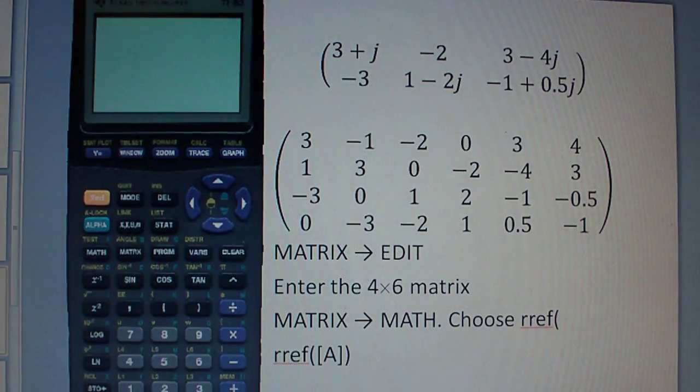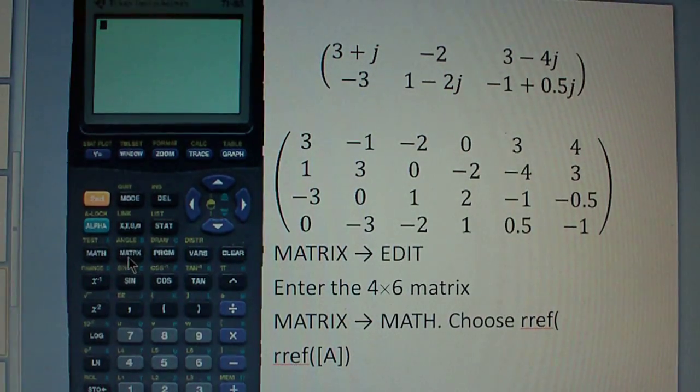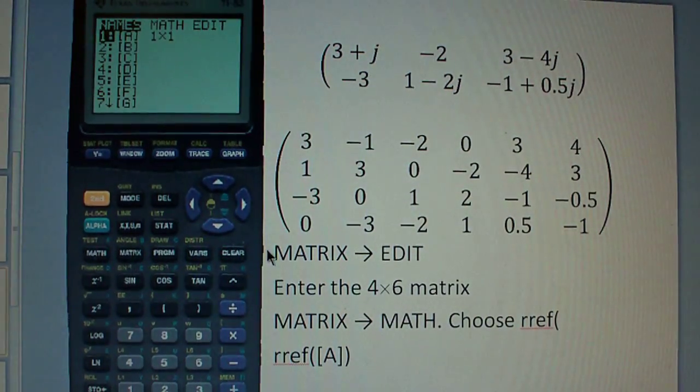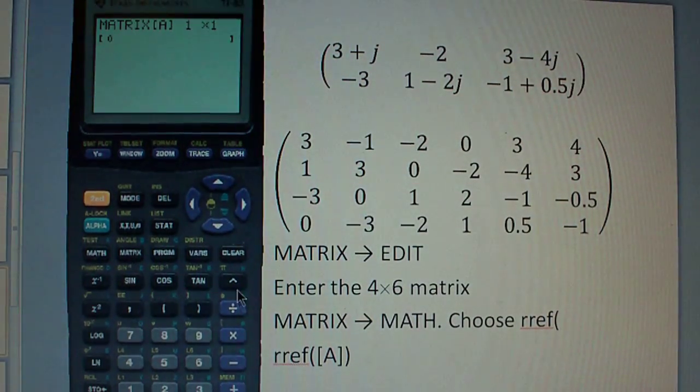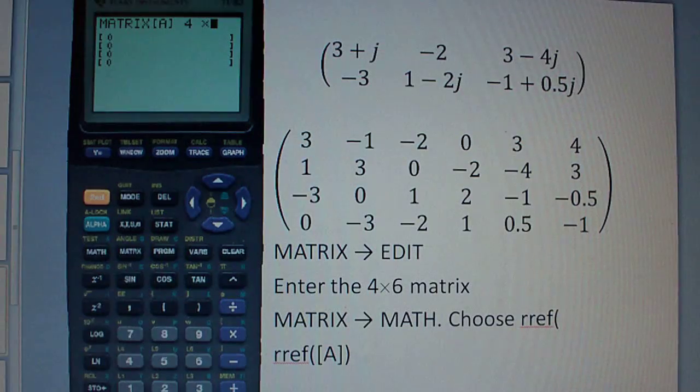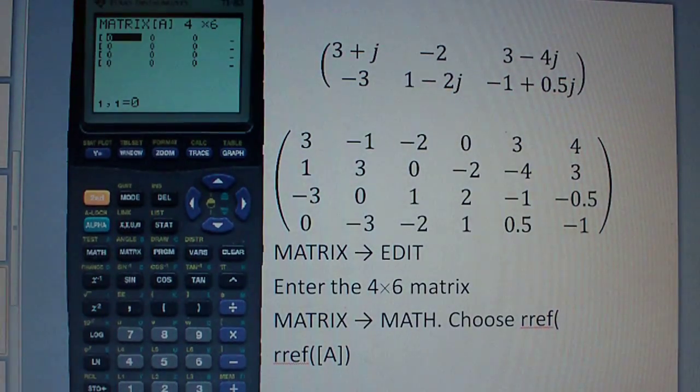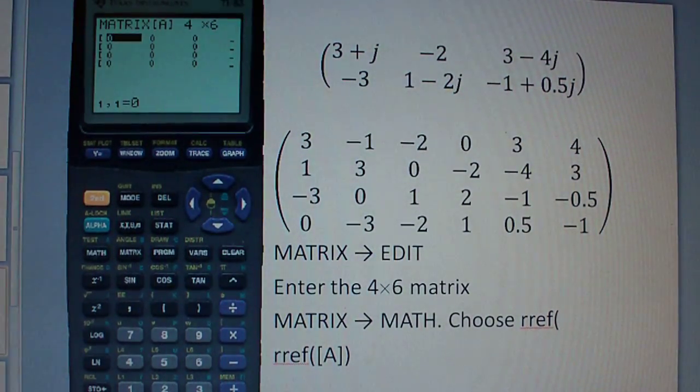Alright, so how do you put this into your calculator? You put matrix. As before, you go to edit. Enter. And then we want a 4 by 6 matrix. And then you start plugging all these numbers in.